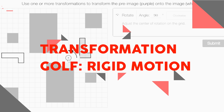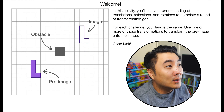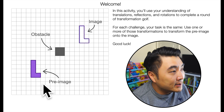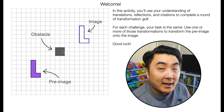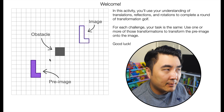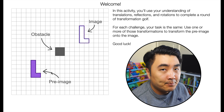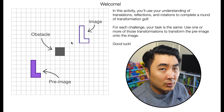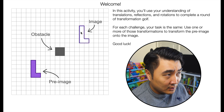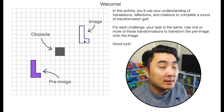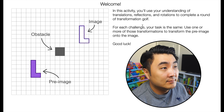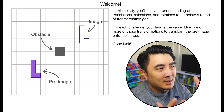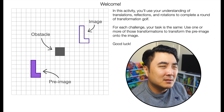Screen one gives you the welcome and basic idea. You have a pre-image, which is where you're starting, and an obstacle you have to get past. If your transformation hits the obstacle, it shatters your pre-image and breaks the game. So you have to go around it — unless you're doing a reflection or rotation. The goal is to get to where the final image is. That's the whole point of this golf game. I guess you're putting a shape into a predetermined hole.